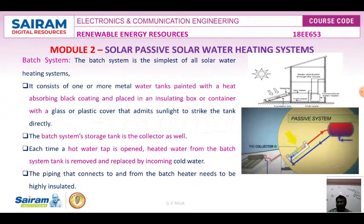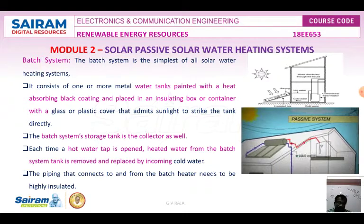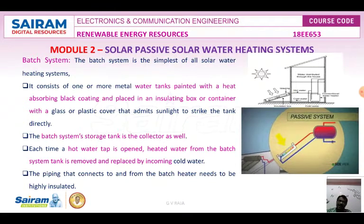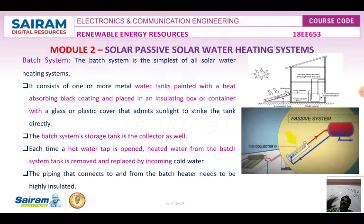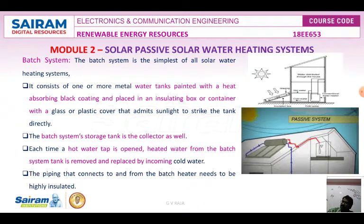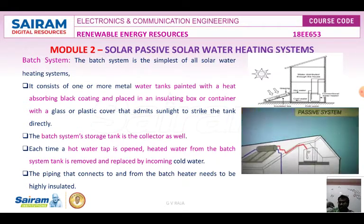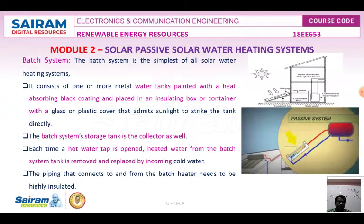In passive systems, such setups are not there. Water is simply circulated through the collector. Whenever the sun comes, radiation falls onto the collector which absorbs it, and the solar energy is converted into heat energy. The liquid passes through the tubes — evacuated tubes are used here.